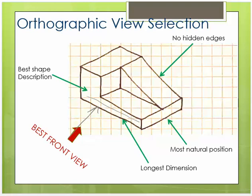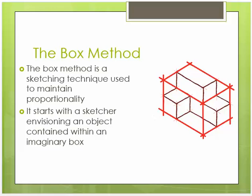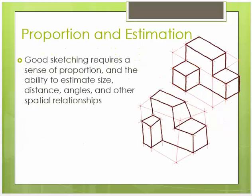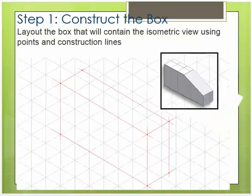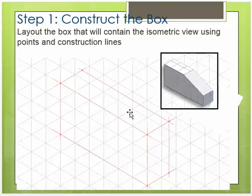Having said that, let's talk about how to make isometrics, again, using the box method. Good sketching requires a sense of proportion and the ability to estimate size, distance, angles, and other spatial relationships. The layout of the box will contain the isometric view using points and construction lines. I'm going to use the light red line as my construction lines as well. We're going to construct the box. Step one is construct the box.